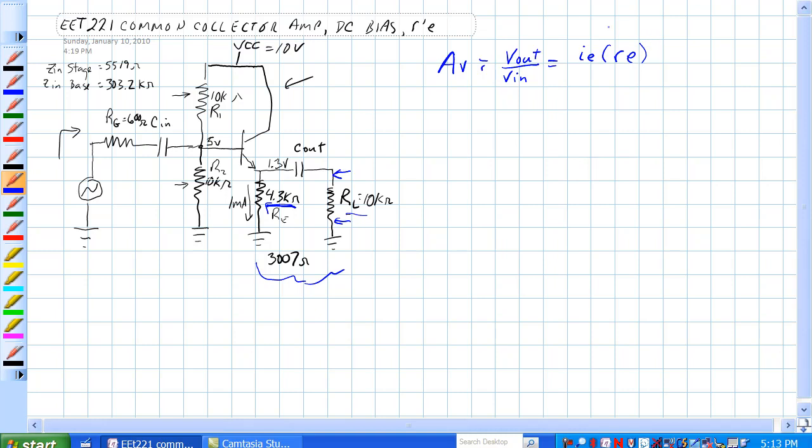That comes out to 3007 ohms. The input current is IB times beta times RE plus R prime E. You can't forget to put this R prime E in here too. So input voltage is right here, output voltage is right there.